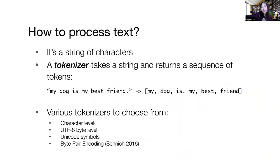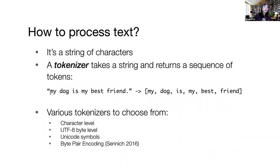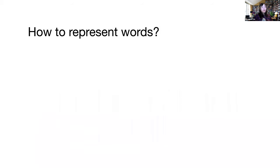You pick the tokenizer that fits your data and your goal. There are many choices: character level gives maybe 50 vocabulary items; there's also UTF-8 Unicode encoding. The most prominent one right now is Byte Pair Encoding (BPE). It starts from character level and tries to merge characters together into a token based on how frequently they appear — so 'my' might become one token, or 'fr' might be one token. BPE is a middle ground between character level and word level.